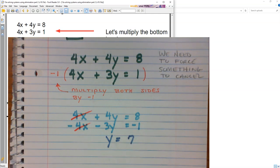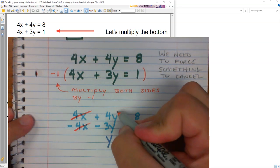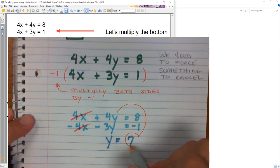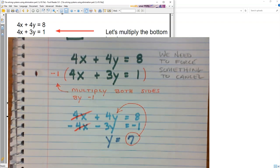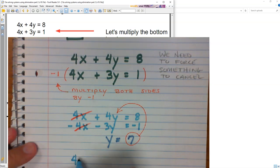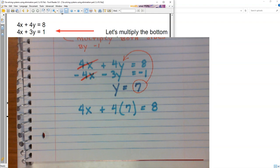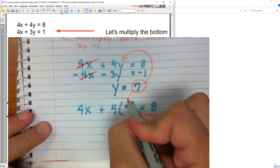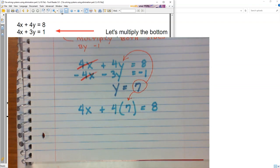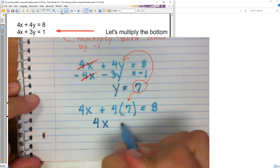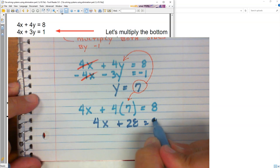I take that y equals 7 and I plug it in up here. So I have 4x plus 4 times 7 equals 8.